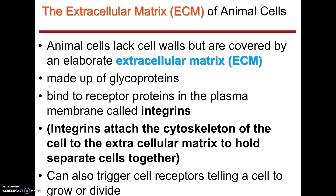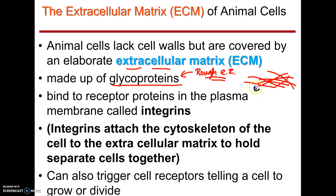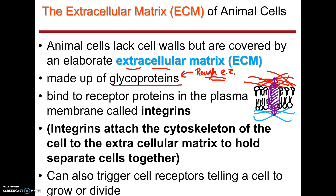The extracellular matrix is made of glycoproteins — proteins with sugars on them — made by the rough ER. The extracellular matrix is a bunch of fibers outside the cell, intertwined and holding things together. Then here's your cell membrane, your phospholipid bilayer. Inside the cell you have the cytoskeleton. Holding the outside to the inside are what are called integrins — proteins in the cell membrane that literally anchor to the cytoskeleton on the inside and the extracellular matrix on the other side. That way, the cells are held in place.